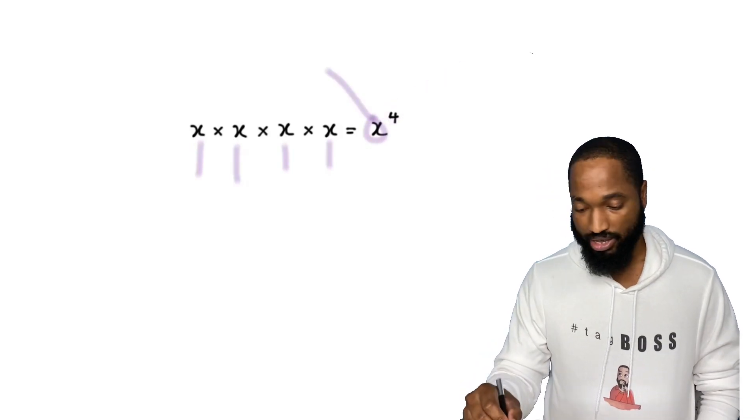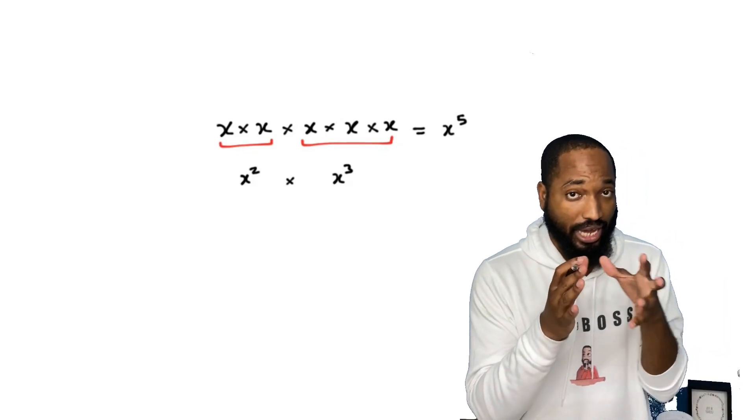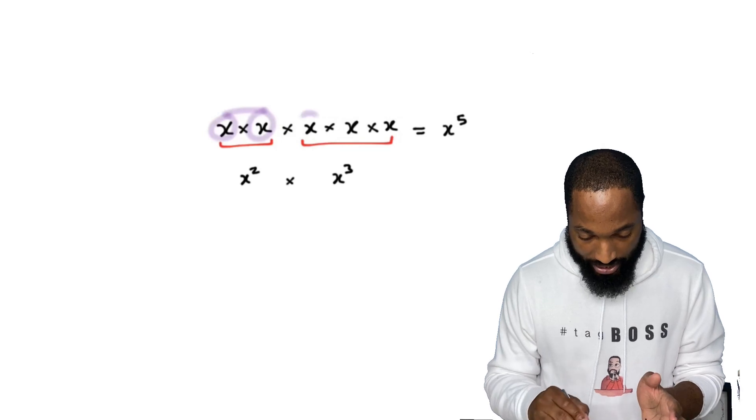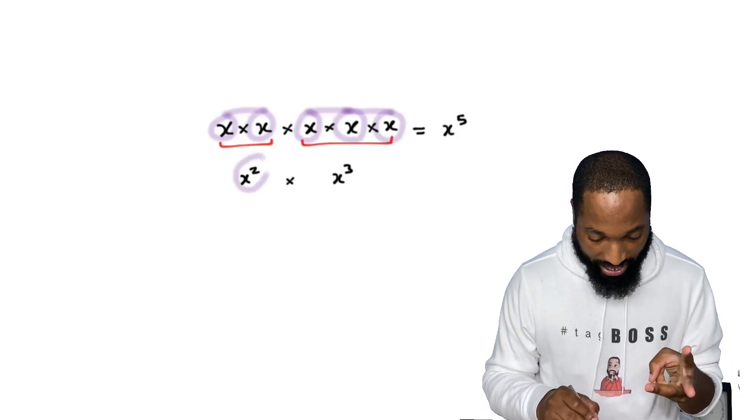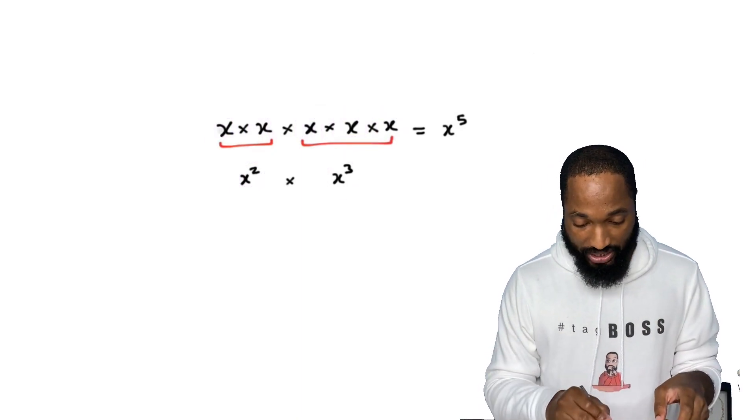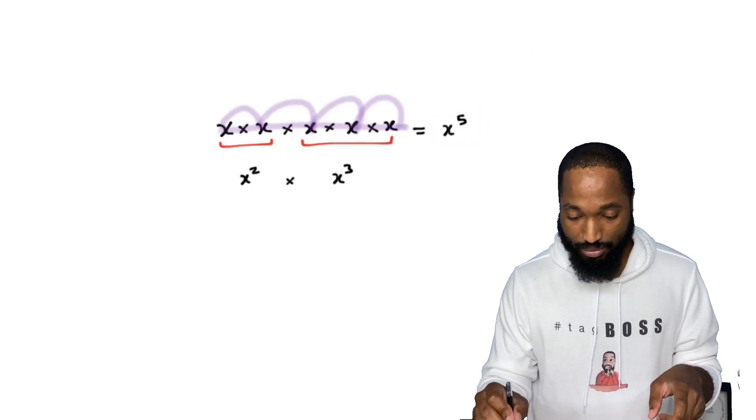Now I want to show you a little trick here. This is x being multiplied twice and this is x being multiplied three times. So this is really x squared and x cube hiding in the darkness here.